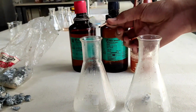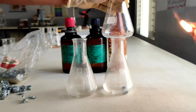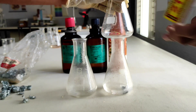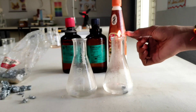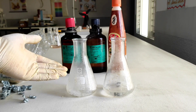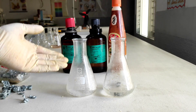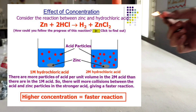The conical flask having HCl and water mixture — that is dilute HCl — does not react vigorously and evolution of hydrogen gas is also less. But the conical flask having concentrated acid will produce a large amount of hydrogen gas. This is the reaction of zinc and HCl acid.